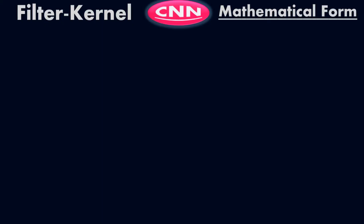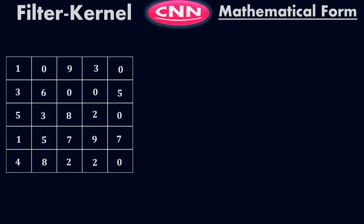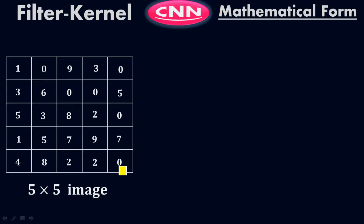Let me show you the mathematical background of what a filter or kernel is and how it works. This is the matrix of the image — it consists of rows and columns, here five rows and five columns, so five times five equals 25 pixels. These are the pixels of this image. Now what I'm going to do is reduce the dimension. In convolutional neural networks, we reduce the dimension of the image because it saves time, consumes less memory, and is less expensive.